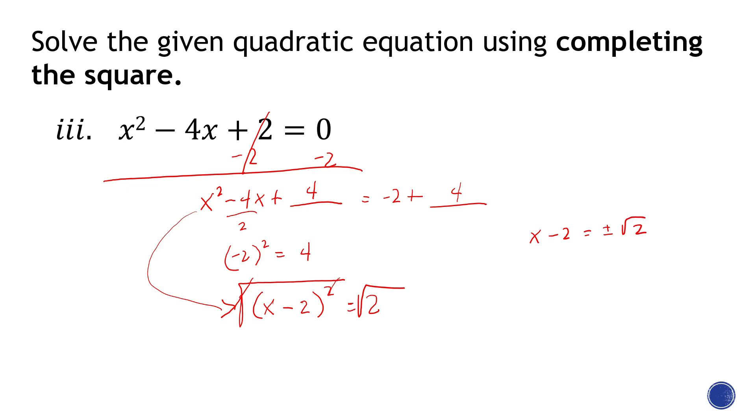Am I going to express my answer as a radical or decimal? Ask your teacher about that. Okay, so the next step here is add 2 on both sides, and this is going to be x = 2 ± √2. Let's go to my second and last example for this lesson.